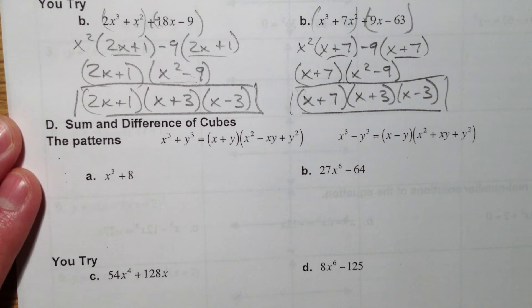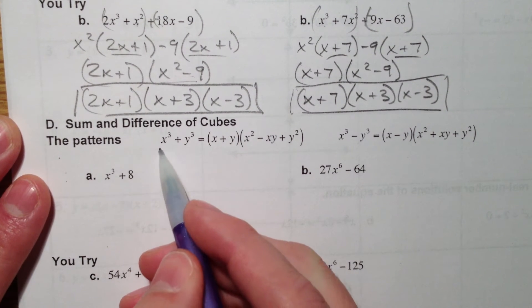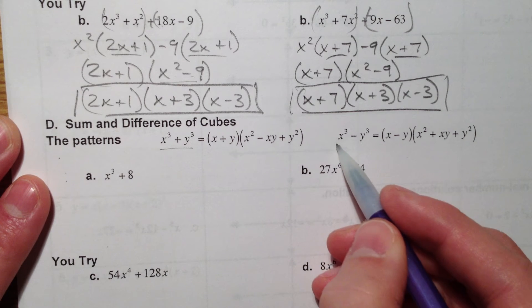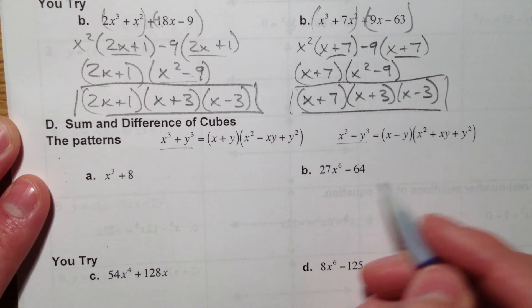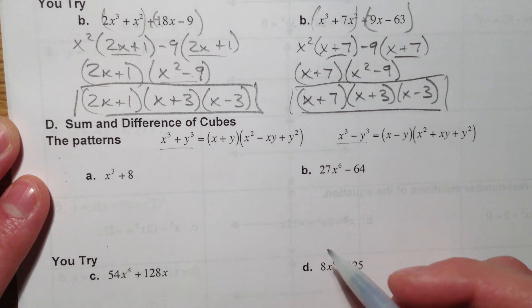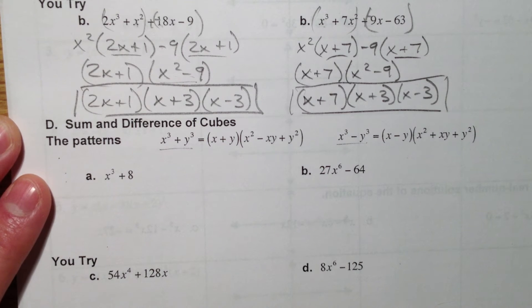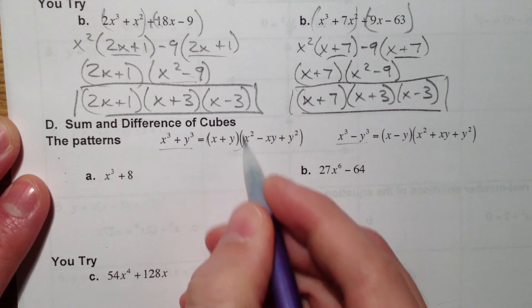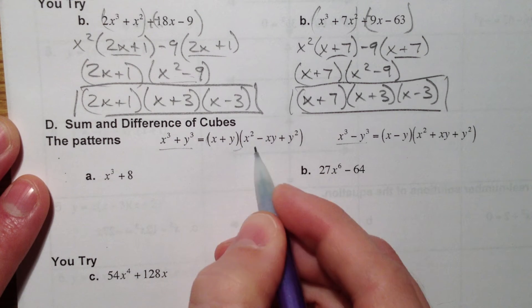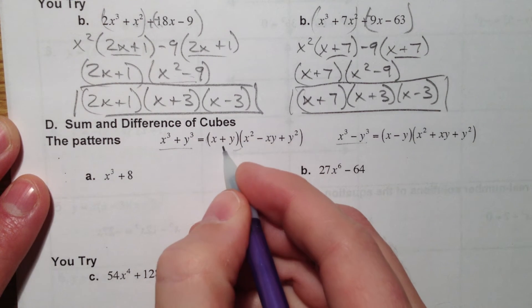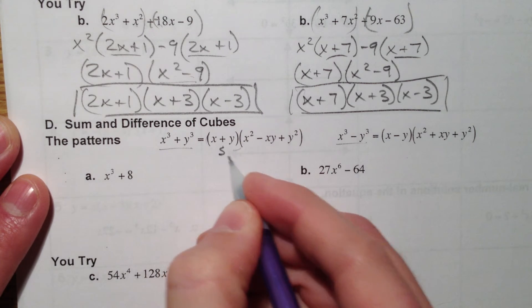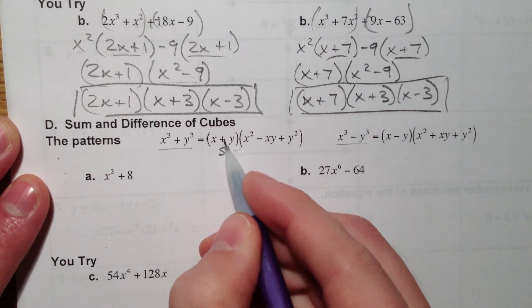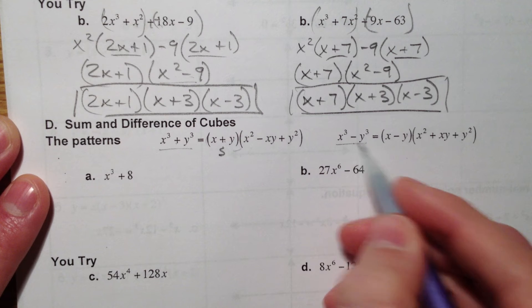Alright. Sum and difference of cubes. So this is the new one. When you have something cubed plus something cubed, and something cubed minus something cubed, they have special factoring techniques. And so notice it's a binomial times a trinomial. Two terms, three terms. Notice that this term is the same. Plus plus. Minus minus.